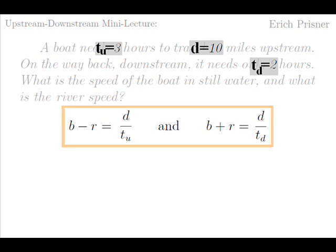Plugging these numbers in our equation templates above, we get the following two equations. B minus r equals ten over three, and b plus r equals ten over two. Two equations in the variables b and r.